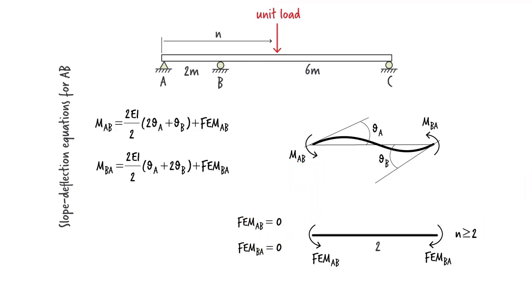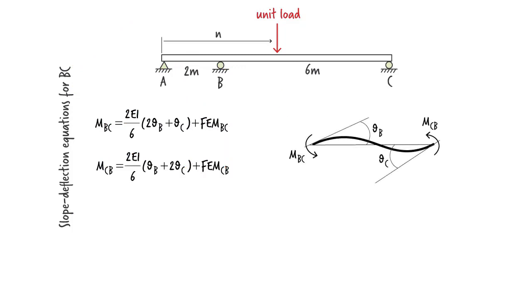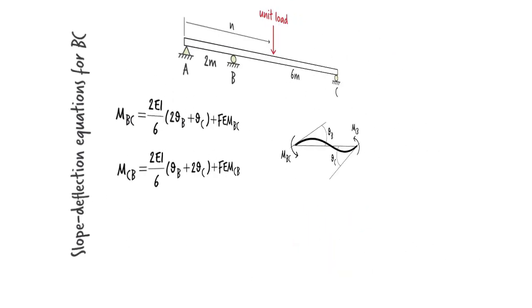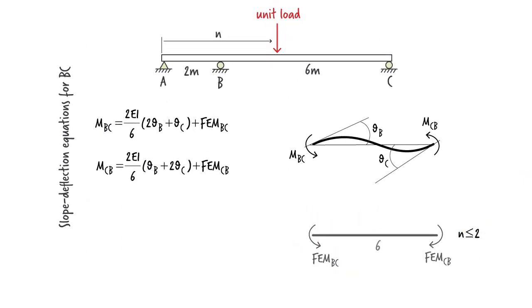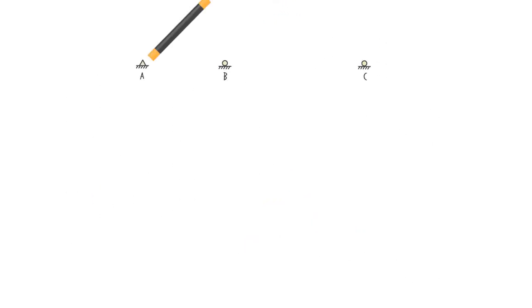We also need to write a pair of slope-deflection equations for member BC. Here they are. The fixed end moments are given using this pair of equations when N is greater than or equal to 2. Otherwise, the moments are 0. Given that the beam has three joints, we need to write three moment equilibrium equations, one equation per support. The equations are...